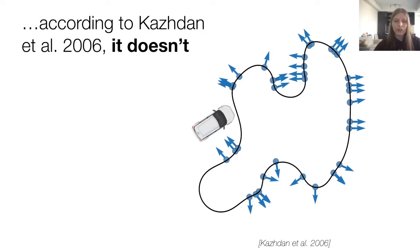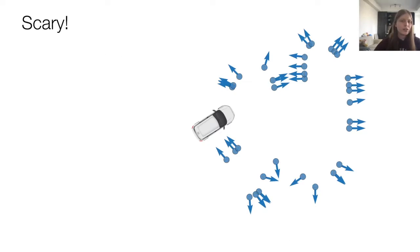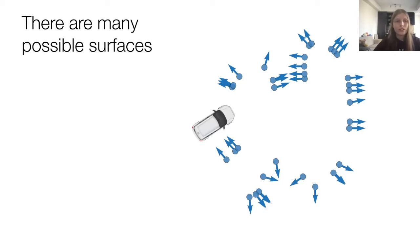Our car does not intersect this reconstructed surface, so thanks to Poisson reconstruction, we can at least formulate an answer to this question. According to this algorithm by Kazhdan et al., the car does not intersect the surface. Now this is a bit of a scary conclusion to reach.